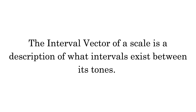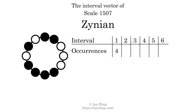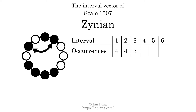The interval vector of a scale is a description of what intervals exist between its tones. There are four intervals of one semitone, four intervals of two semitones, three intervals of three semitones, three intervals of four semitones, five intervals of five semitones, and two intervals of six semitones. Each interval does not appear in this scale a unique number of times, so this is not a deep scale.